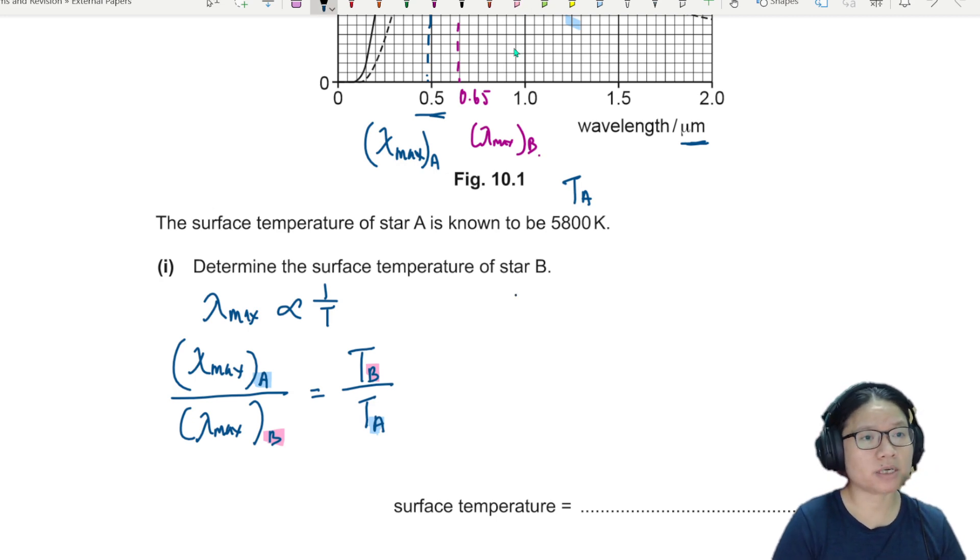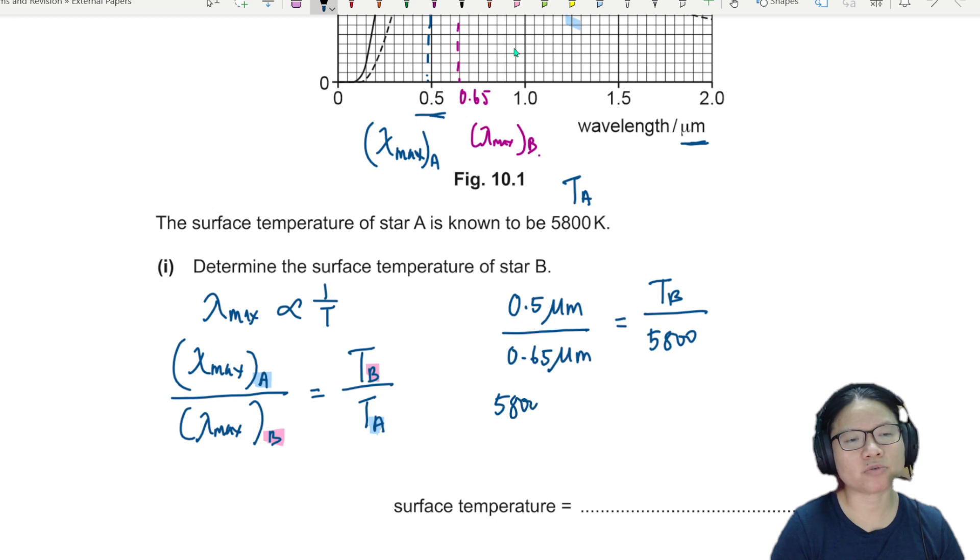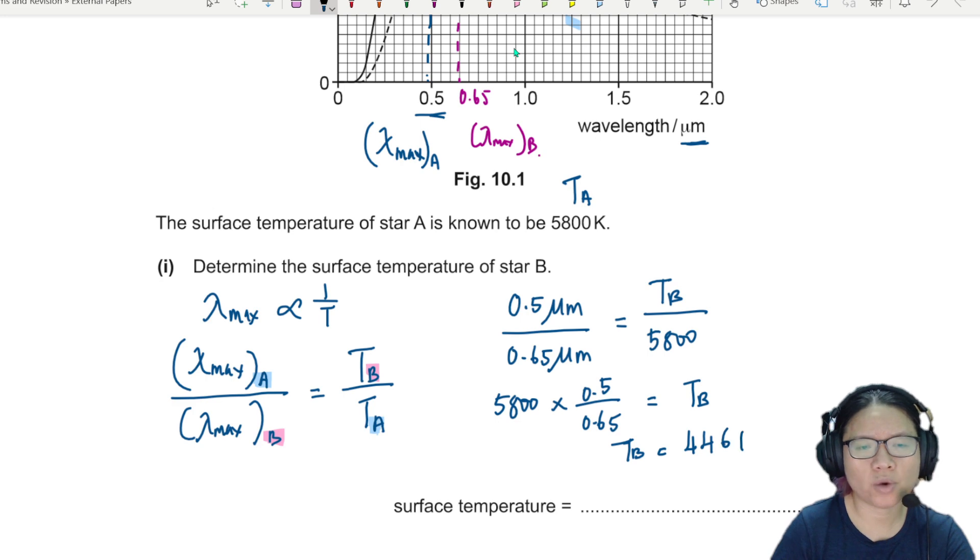So lambda maximum for A from here is 0.5 micrometer. Lambda maximum for B is 0.65 micrometer. This will be equal to the temperature of B over the temperature of A, 5800 Kelvin. So finally, I will get 5800 multiplied by 0.5 divided by 0.65. Again, writing extra step for people who need it. If you don't need it, you can just press your calculator directly.